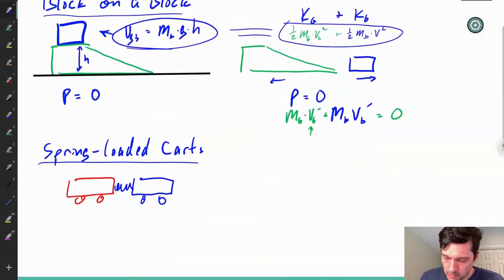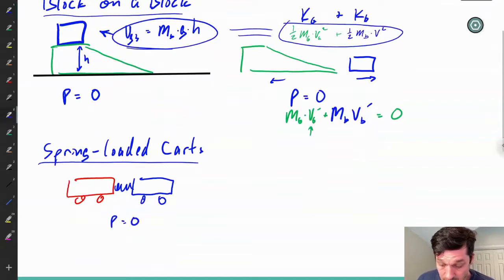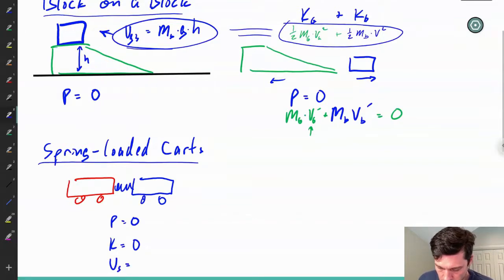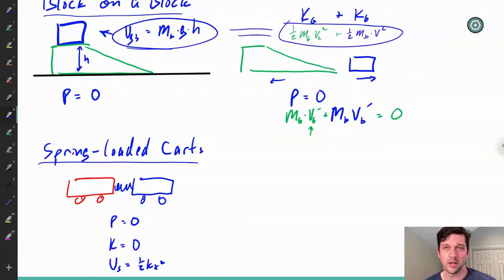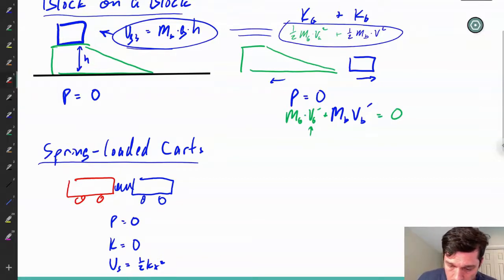Another example is spring-loaded carts. We have a red cart and a blue cart, and at the moment both are at rest, so momentum is zero and kinetic energy is zero. Before they are popped apart, we can assume there is some spring potential energy: one-half k-x squared. We'd need to know something about the spring and how far it was compressed. Conservation of energy still applies — it just changes form from spring energy to kinetic energy.